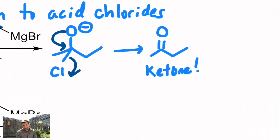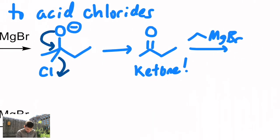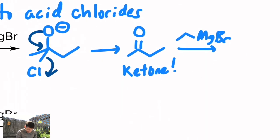That's what we need to say now. So you get an intermediate that looks like this after the chloride leaves. What functional group is that? That's a ketone. And Grignards react with ketones. So you get a second addition. You cannot stop this from happening. This is called over addition and it's impossible to stop.